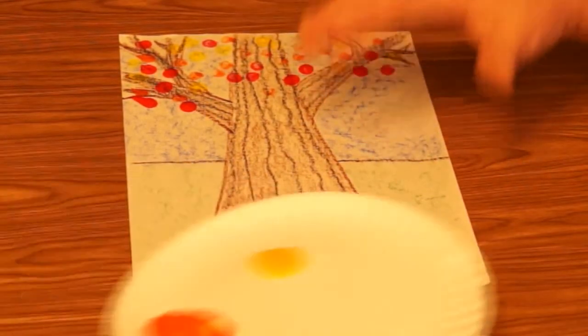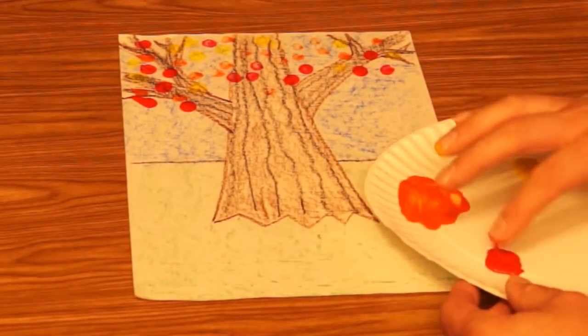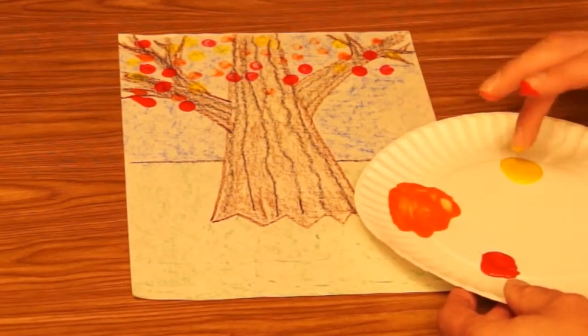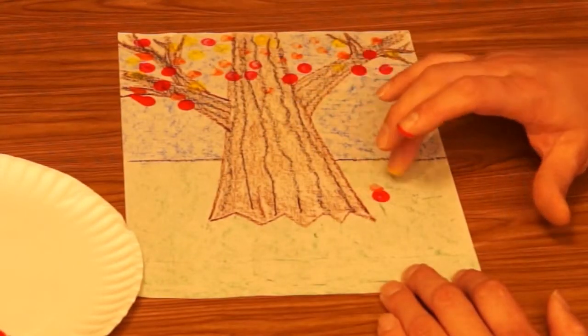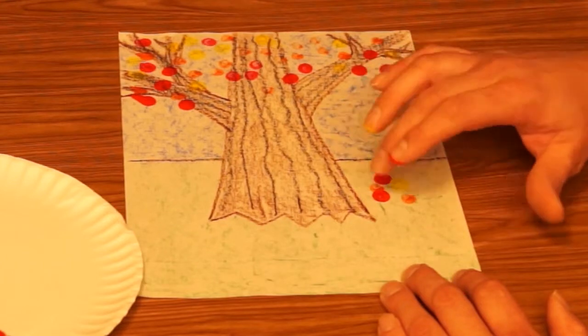You can also put leaves on the ground. Now I remember when I was younger I used to like to pile up the leaves and then run and jump in them. A lot of fun. But you can make a pile of leaves on the ground too if you'd like.